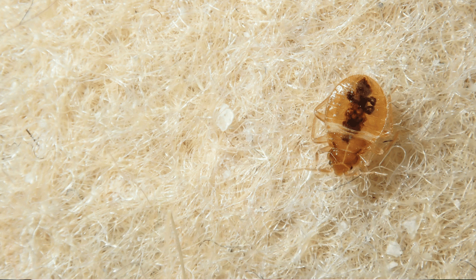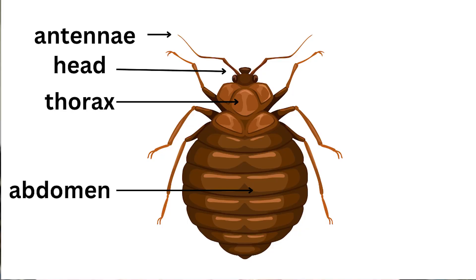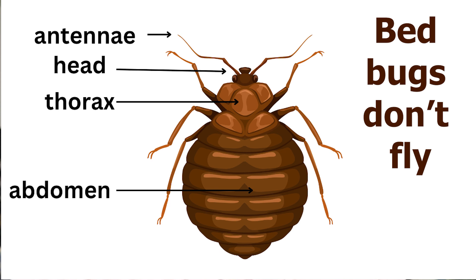When they're smaller, younger bed bugs look more of a light tan, almost translucent — you can sort of see through their body. Bed bugs have three main body parts: the head, the thorax, and the abdomen. They don't have any wings, but they do have six legs and prominent antennae.